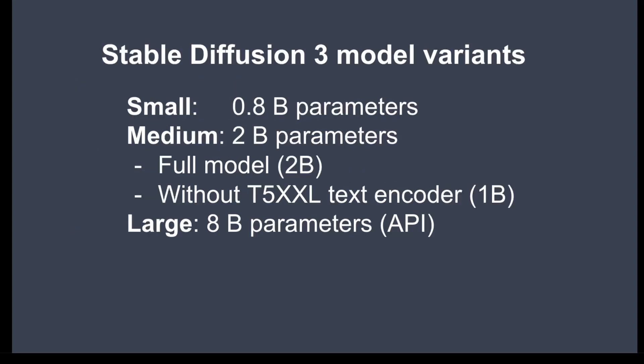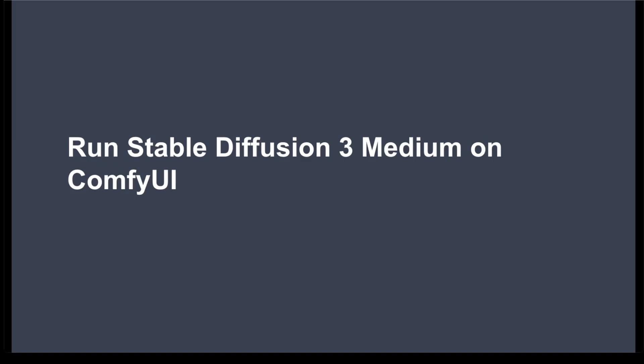Stable Diffusion 3 is not a single model but a family of three models: small, medium, and large. Stability AI has not confirmed which models are which, but from what we know, the one available through the API is the large model. The one just released is the medium model, which itself has two variants: the full model with 2 billion parameters, and a version without the T5XXL text encoder, which reduces the size to about 1 billion parameters.